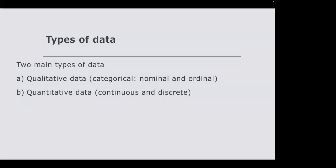Now turning to categorical data: nominal and ordinal. Nominal data is collected on a subjective scale — for example, rating a presentation on a scale of one to five. The difference between values is not mathematical because what one person means by 'one' is not the same as what another person means. Because this is subjective, you cannot subtract nominal data, and you cannot find a meaningful average.